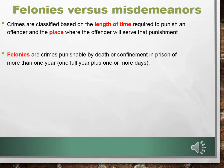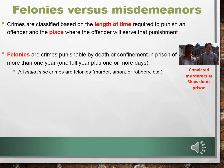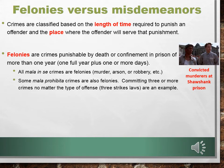All mala in se crimes are felonies: murder, arson, robbery, burglary, attempted murder. Anything that is inherently bad is considered a felony. Here's Morgan Freeman and Tim Robbins — their characters are serving life sentences because they are convicted murderers, and they're at Shawshank Prison, the state penitentiary. In Virginia, we call that Sussex 1 and Sussex 2. Some mala prohibita crimes are also felonies — for example, committing three or more crimes, no matter the type. We call that a three strikes law, and that's a felony punishable in a prison for more than one year.